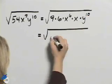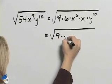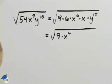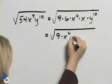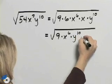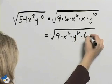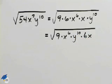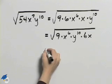I will now gather the perfect squares. So I'll write 9 times x to the 6th times y to the 10th, and then I'll put 6 and x on the end, and I can do that using the commutative property.